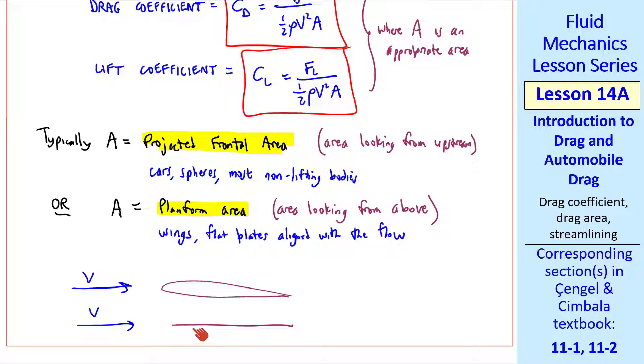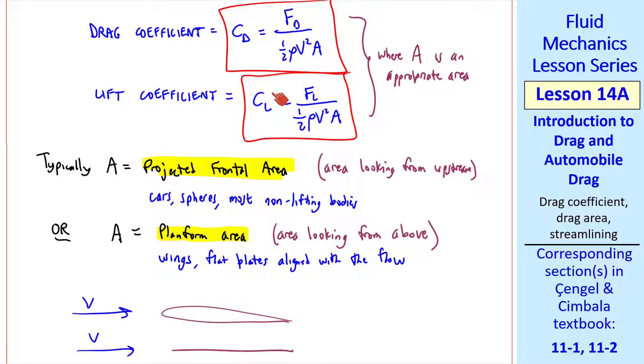For an infinitesimally thin flat plate, the projected frontal area is zero, so we really have to use a planform area here. In these definitions of drag coefficient and lift coefficient, you can use whatever area you want, as long as you identify it, so that someone else can use the appropriate area to calculate lift and drag force.